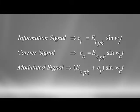A sine wave can be completely described by using three parameters: the amplitude of the sine wave, the phase of the sine wave, and the frequency of the sine wave.